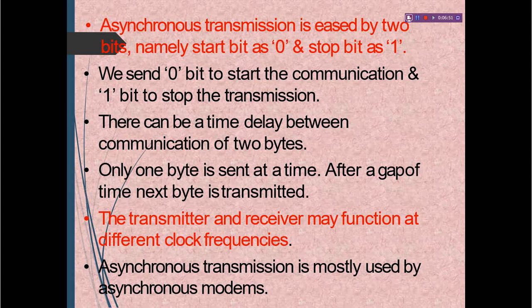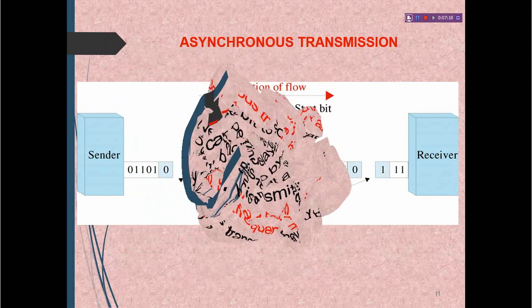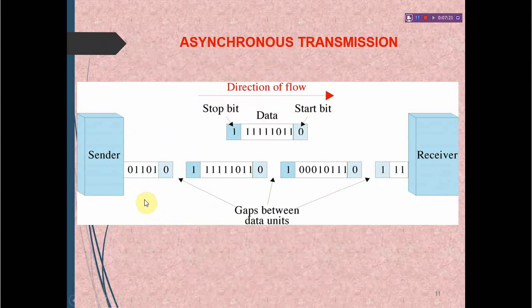There can be a time delay between communication of two bytes; after a gap of time the next byte is transmitted. The transmitter and receiver may function at different clock frequencies, as the name asynchronous suggests. Asynchronous transmission is mostly used by asynchronous modems. In asynchronous transmission there is a start bit and stop bit and always a gap between two data units.